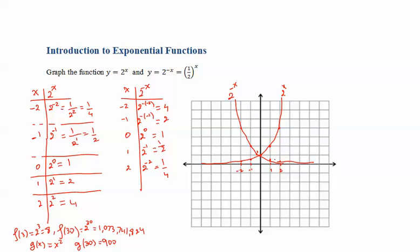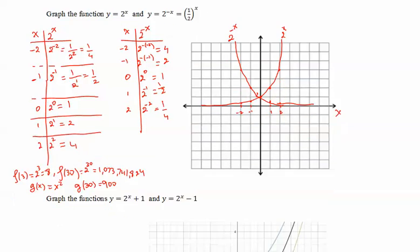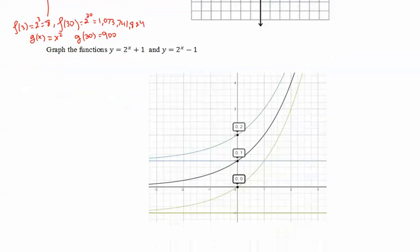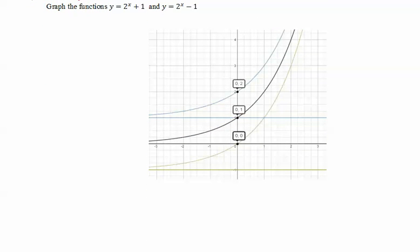This gives us a good way of looking at these two functions. 2 to the power of x grows as x goes to infinity, so we call it exponential growth. 2 to the negative x starts declining, getting smaller and smaller, so we call it exponential decay. Now let's see how to graph functions without plotting points, but just by using transformations.